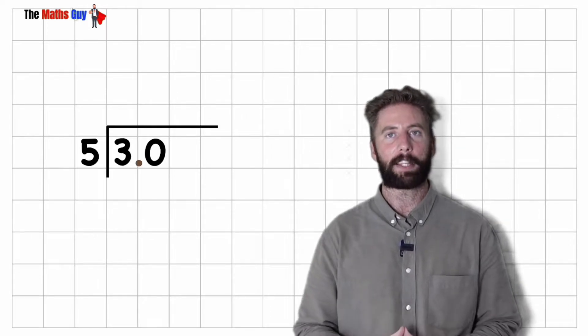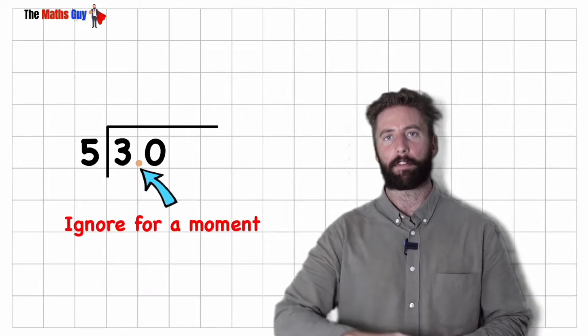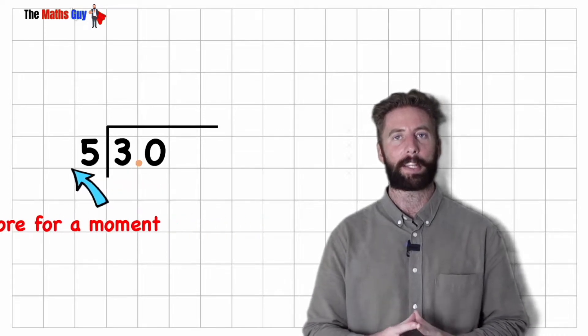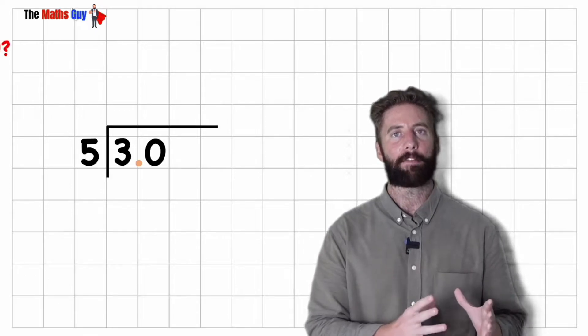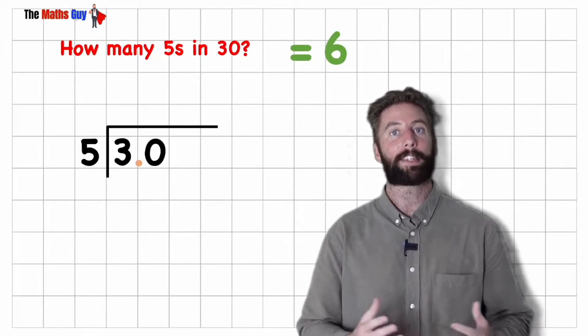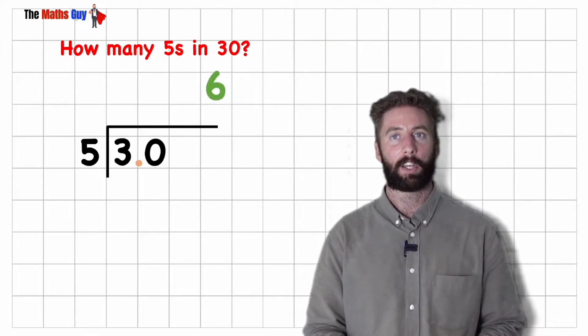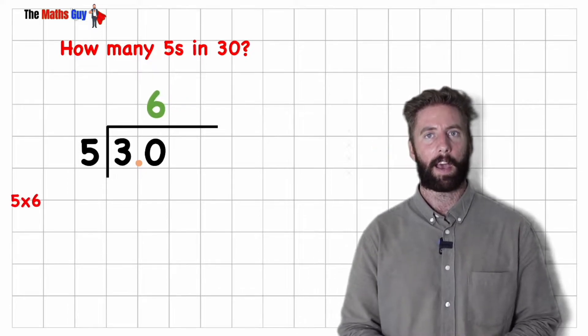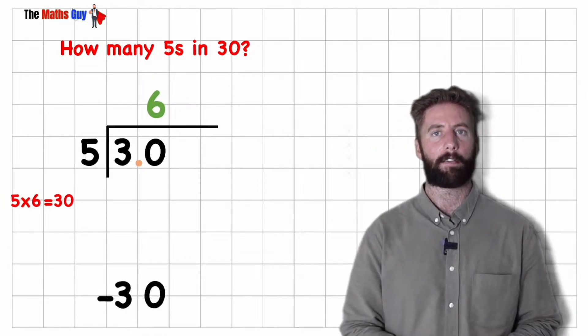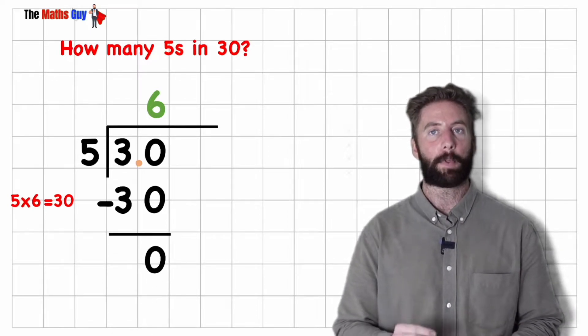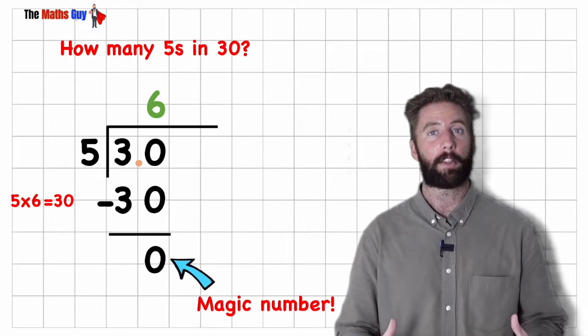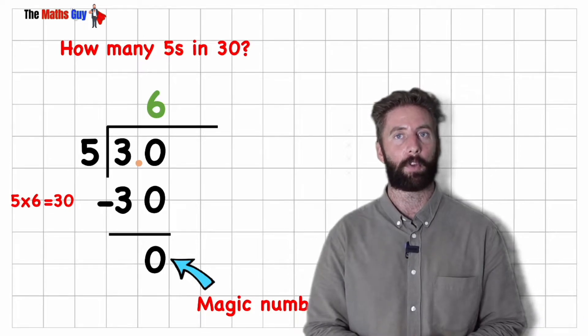So let's put my 0 here and for a moment I'm going to forget about this decimal point and I'm going to look at this 3.0 as a 30 and I'm going to ask myself how many fives are there in 30? Well we have six fives in 30. So I'm going to put my 6 up here and then I'm going to think well 6 times 5 is 30. So now I can subtract 30 which leaves me with 0 which is our magic number, the number we want to make sure we get down to when we're doing division.